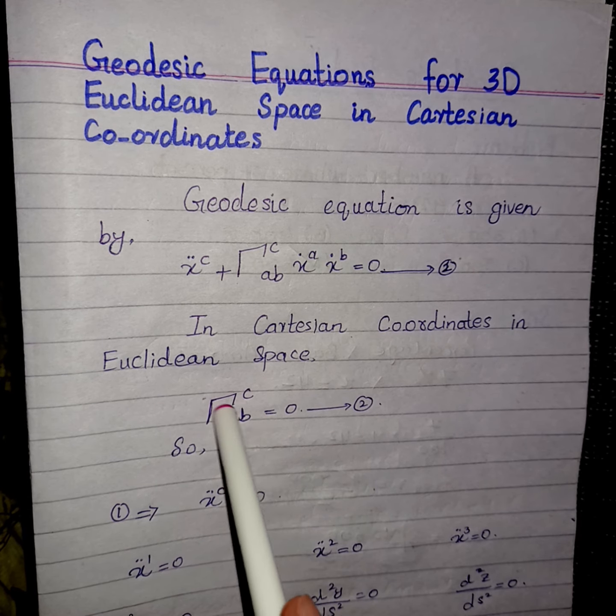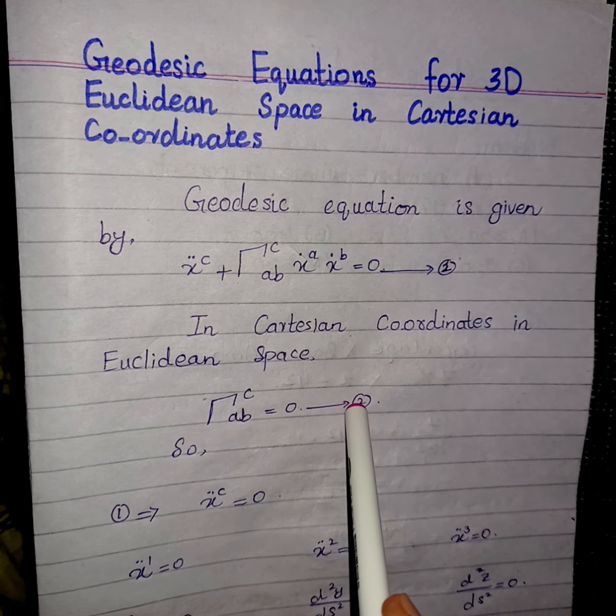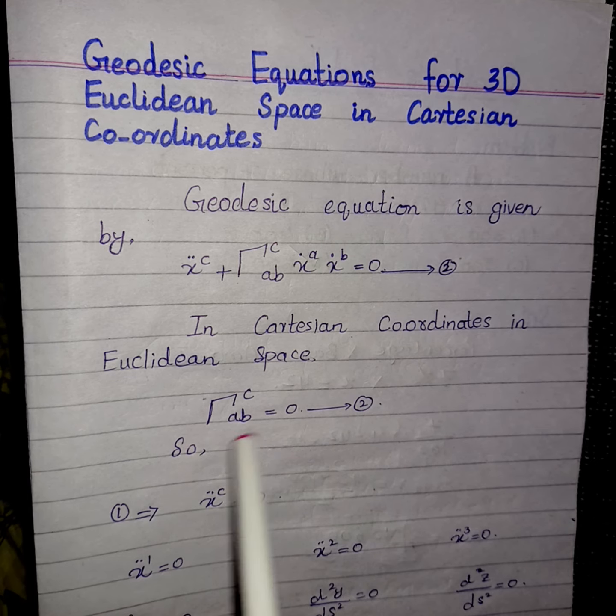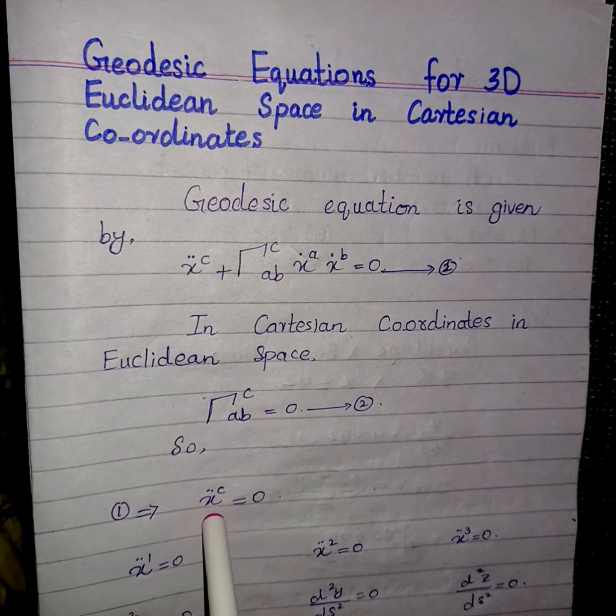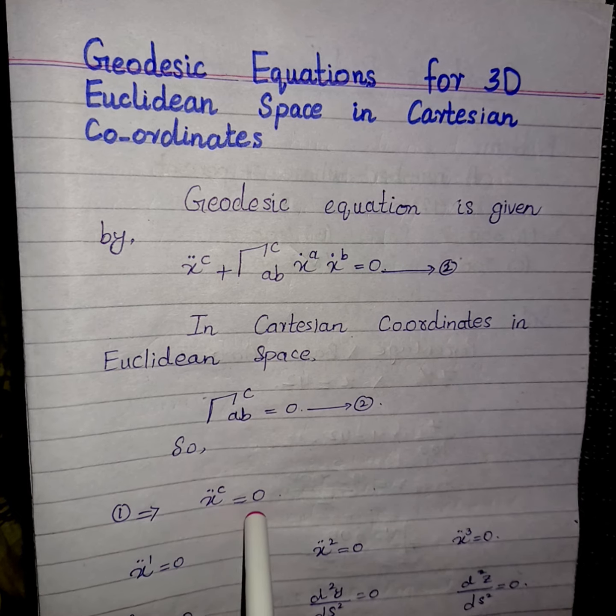So I have set Γ^c_ab equal to zero. That means if I substitute equation number two into equation number one, then I will get ẍ^c = 0.